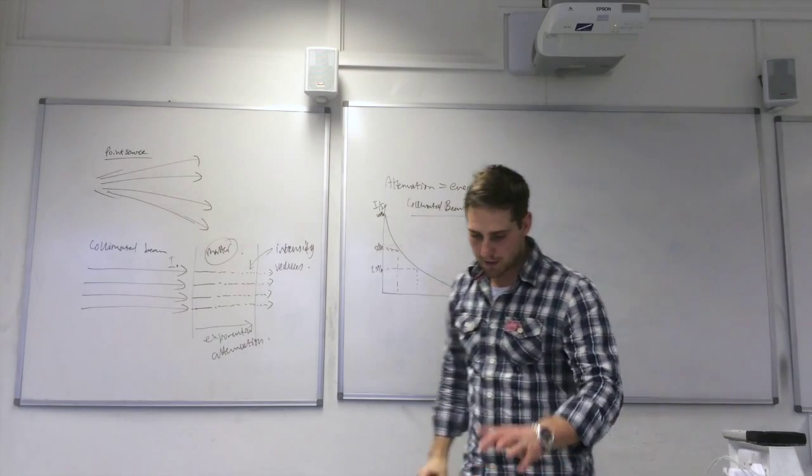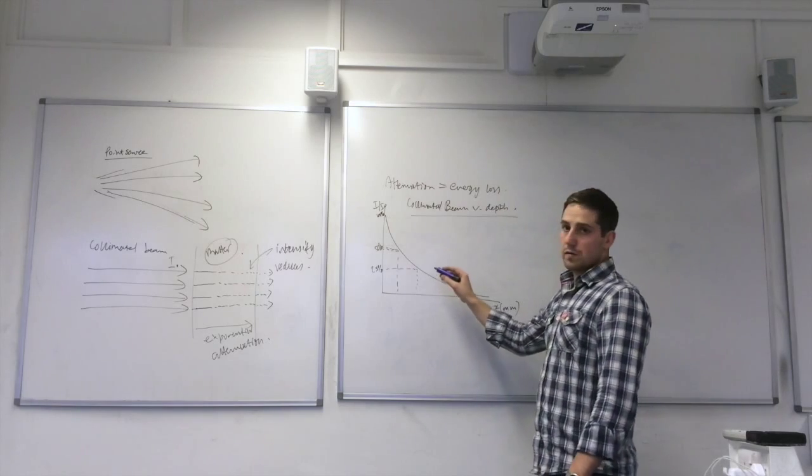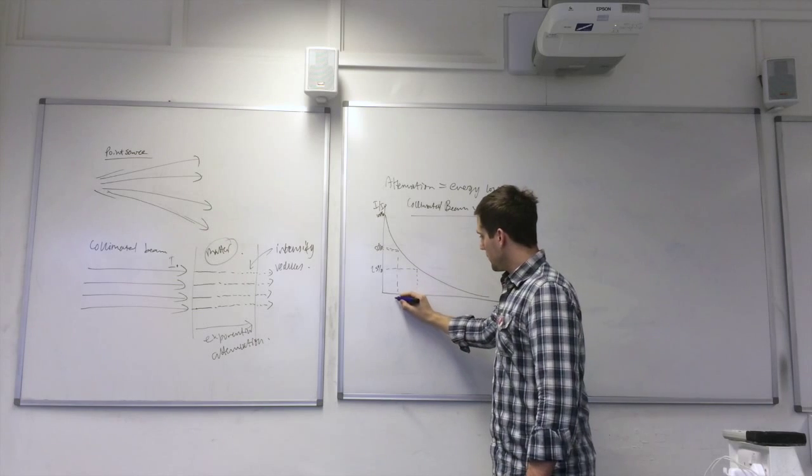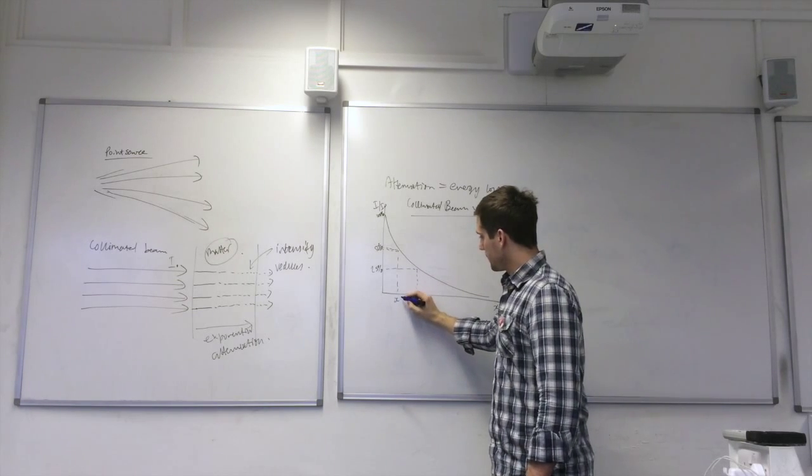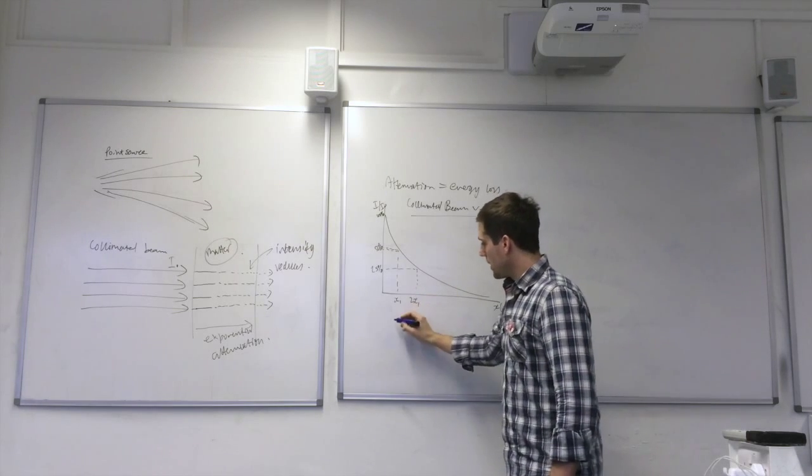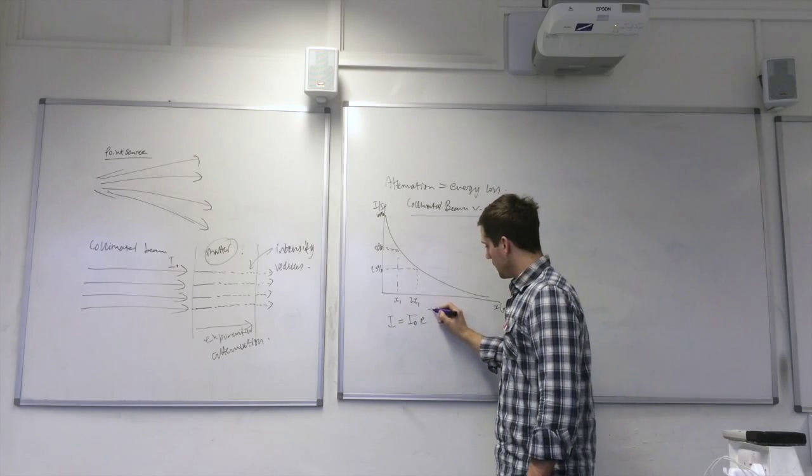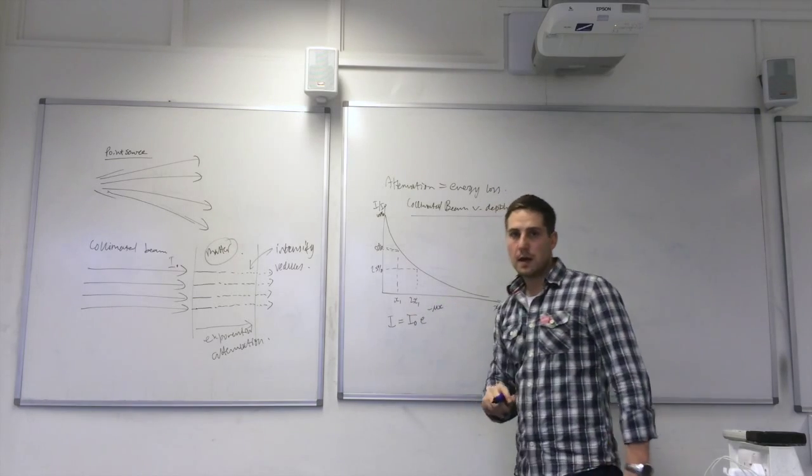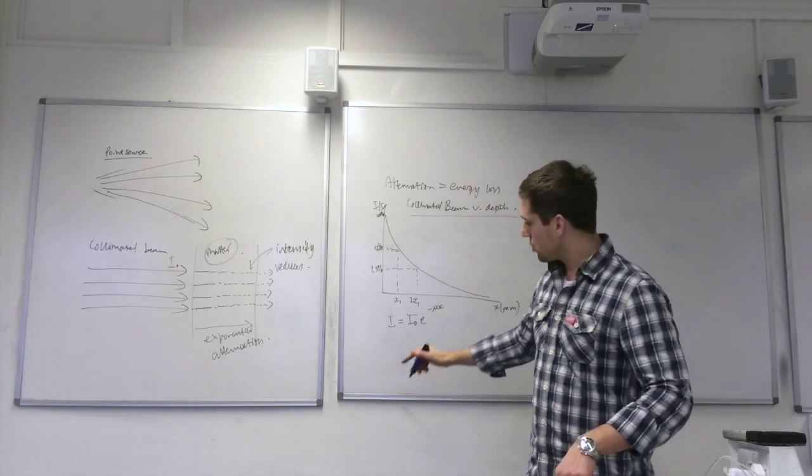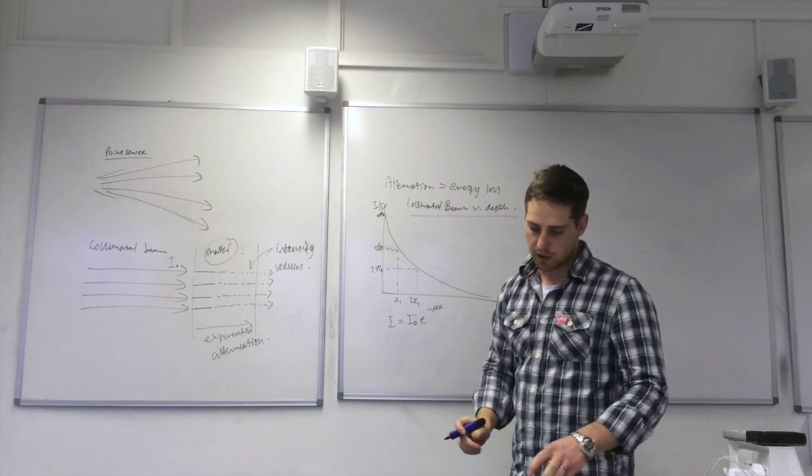So that's the exponential graph. The equation for this intensity at any point - so we call that x1, and this would be 2x1 for example - the equation is I equals I0 e to the minus mu x. Mu is the linear attenuation coefficient, and each material would have its own linear attenuation coefficient.